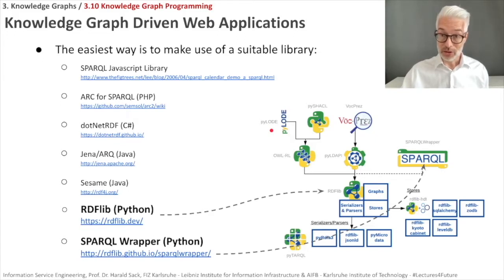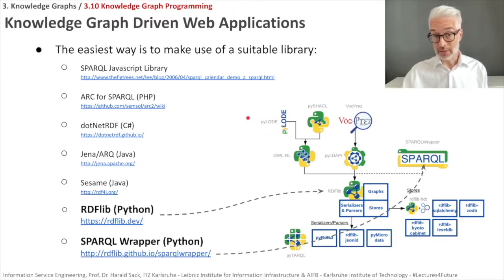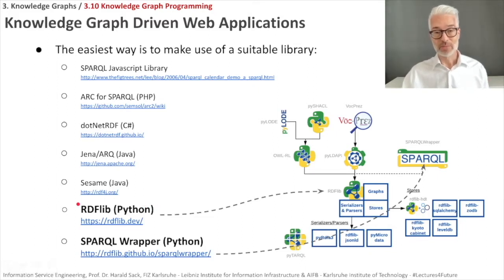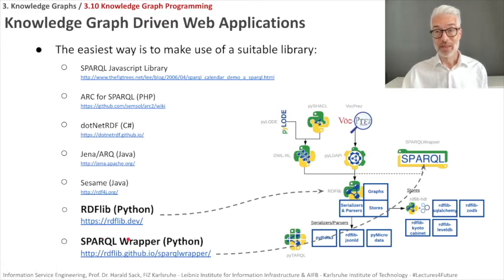The easiest way to access knowledge graphs, whether on the web or in your program, is to use a suitable library. There are RDF libraries and SPARQL libraries for many programming languages — for example, there are implementations for JavaScript, PHP, C#, and Java. For simplicity, we are using Python. The first thing I'll show you is the use of RDFLib, a Python library to access, create, and manipulate RDF data, and then we'll use the SPARQL Wrapper to access a data repository on the semantic web.